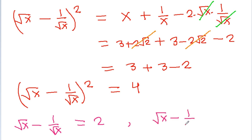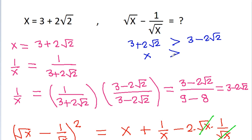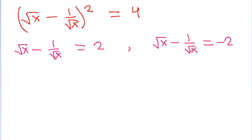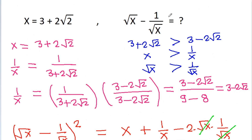To confirm the positive sign: since x equals 3 plus 2 root 2, x is greater than 1 by x, which equals 3 minus 2 root 2. Therefore root x is greater than 1 by root x, meaning root x minus 1 by root x cannot be negative. So root x minus 1 by root x is equal to 2.